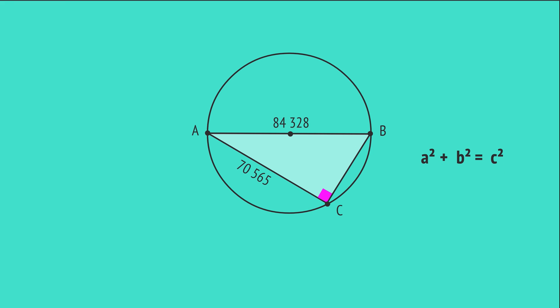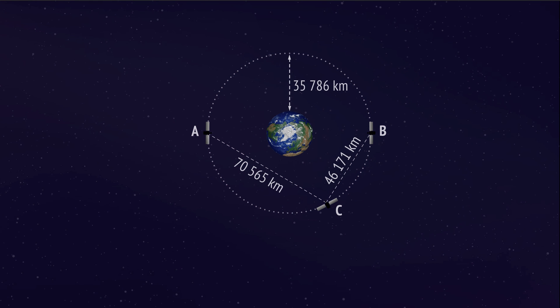So we can use Pythagoras to find the unknown length BC, one of the shorter sides. In this case, we'll rearrange the formula for a shorter side before substituting values. Subtract b squared from both sides, and then take the square root. Substitute the values, and enter this into a calculator to give BC equal to 46,171 kilometers. And so the distance between satellites B and C is 46,171 kilometers.